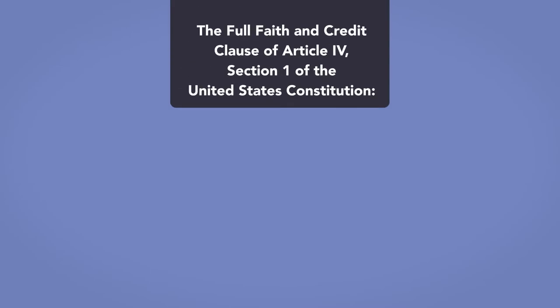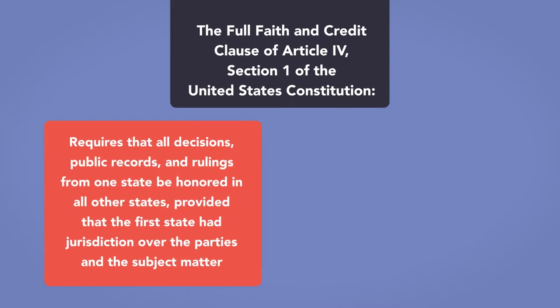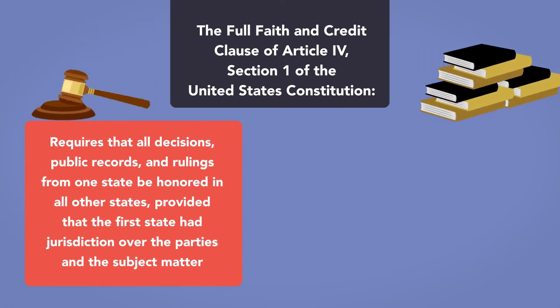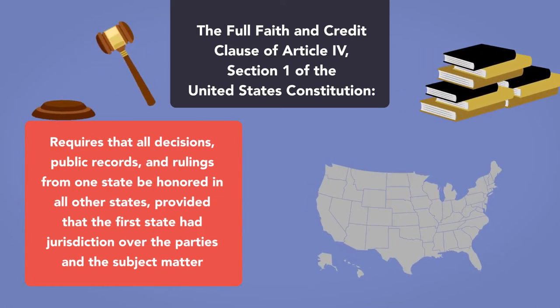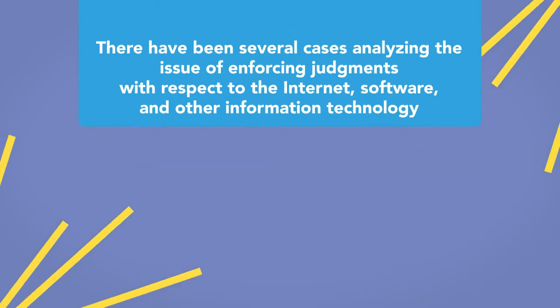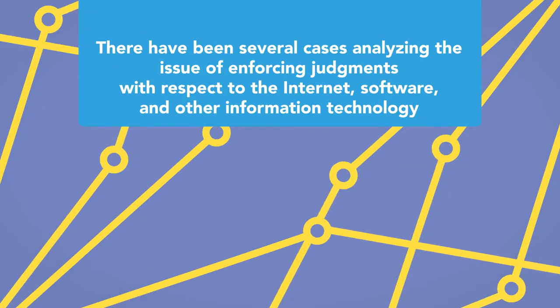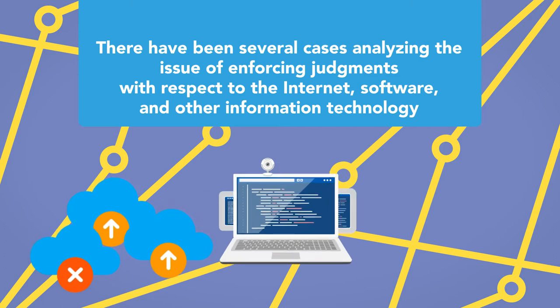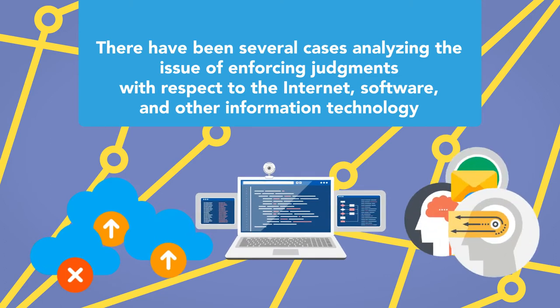The Full Faith and Credit Clause of Article 4, Section 1 of the United States Constitution requires that all decisions, public records, and rulings from one state be honored in all other states, provided that the first state had jurisdiction over the parties and the subject matter. A court in one state must generally enforce a judgment rendered in another state. There have been several cases analyzing the issue of enforcing judgments with respect to the internet, software, and other information technology.